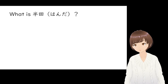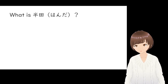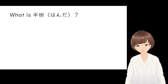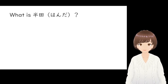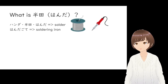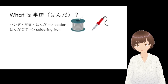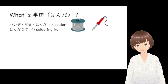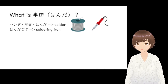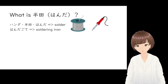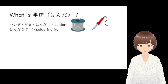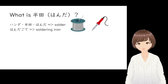When assembling a circuit on a circuit board, the first word you may hear is HANDA. We write it sometimes in kanji, sometimes in hiragana, and sometimes in katakana, but it's referring to solder. We call a soldering iron HANDAGOTE.